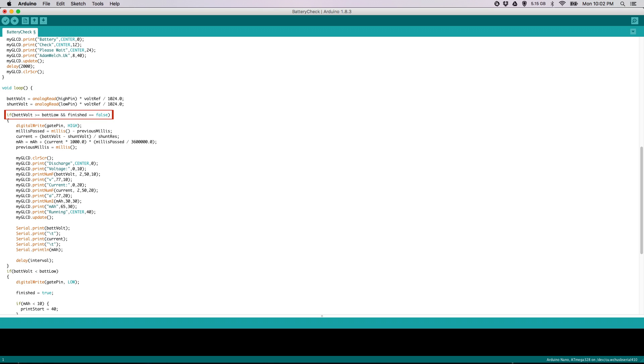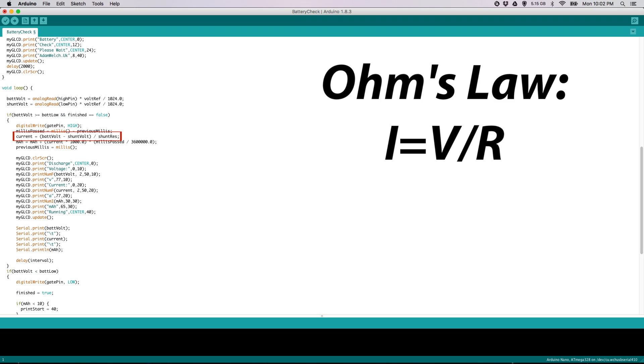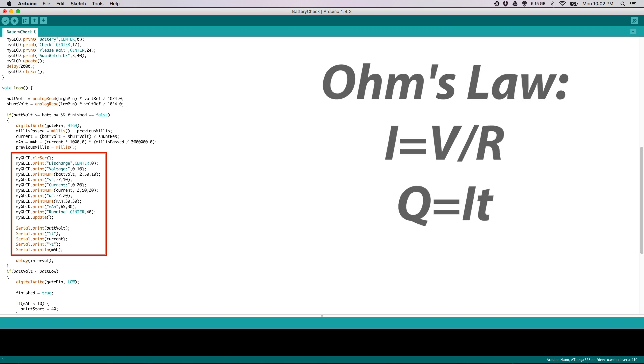First, we check to make sure that the battery isn't drained out yet. Then we send a signal to the MOSFET to close the circuit by switching the digital pin to high. We'll measure the voltage on both sides of the shunt, then divide the difference by the known resistance of the shunt to get the actual current going through the circuit. We'll do a quick conversion in units on the current and multiply by time to get the measured capacity of the battery at that point, and then display it. Rinse and repeat.